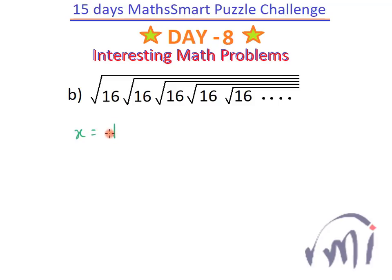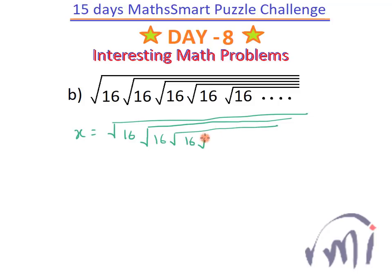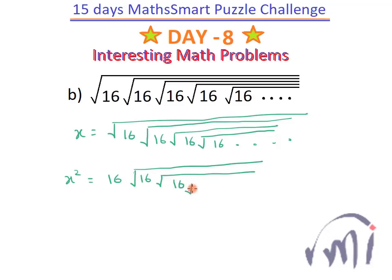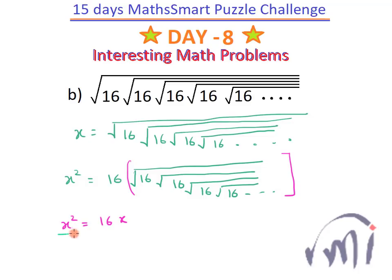So let x equal the square root of 16 times the square root of 16 times the square root of 16, continuing infinitely. If I square both sides, x squared equals 16 multiplied by the square root of 16 times the square root of 16, again going on infinitely. But that infinite portion is nothing but x itself. So x squared equals 16x. Dividing both sides by x, x cancels and I get x equals 16.